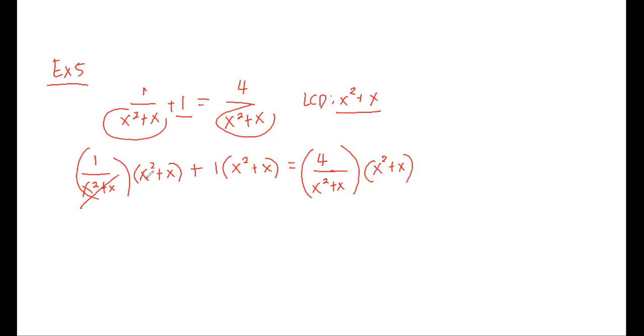We cancel this once since they are the same as the LCD. Then we solve on the remaining parts. We have 1 plus, we do the distributive property. So we have x squared plus x. On the other side, we are left with 4.